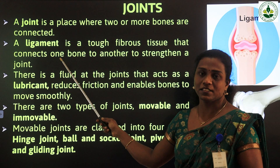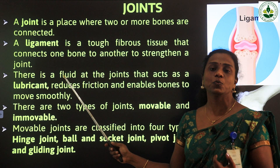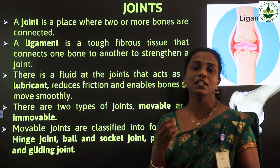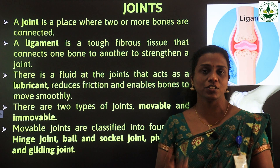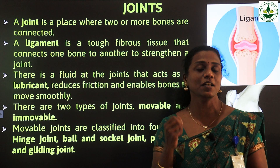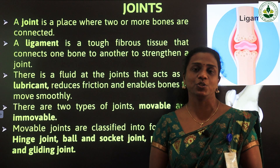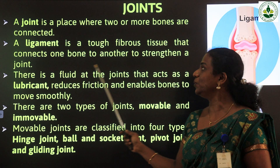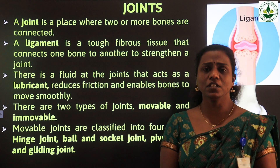How can the bones be connected? A joint helps for that. Moreover, a ligament is there. A ligament is a tough fibrous tissue that connects one bone to another, and also it strengthens the joint. We already studied tissues in a smaller session — a tissue is formed when cells connect together. Cells are the building blocks of our body. So a ligament is a tough fibrous tissue that connects one bone to another to strengthen a joint.